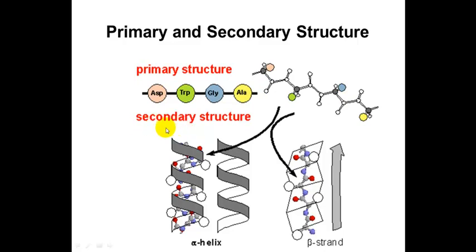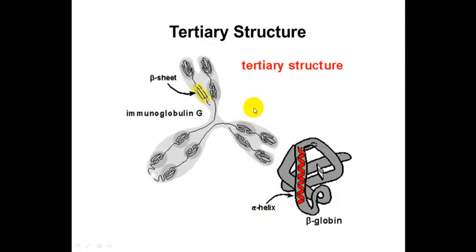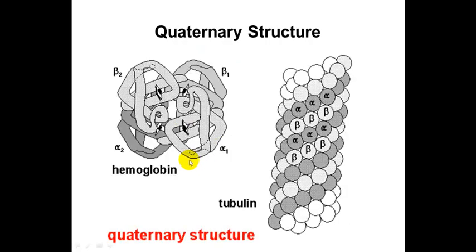There are two elements of secondary structure discovered by Linus Pauling. One is the alpha helix, which you see a lot of in hemoglobin, and the other is the beta strand or beta pleated sheet. Then we have tertiary structure, which is the overall folding — you might have beta pleated sheets and alpha helices as part of it, but the overall total folding of the protein. The fourth level is quaternary structure: hemoglobin has four subunits that fit together, and tubulin has alpha and beta subunits that fit together.